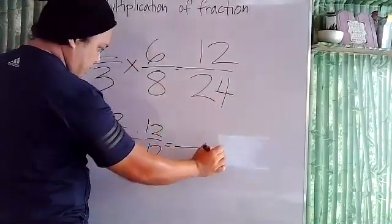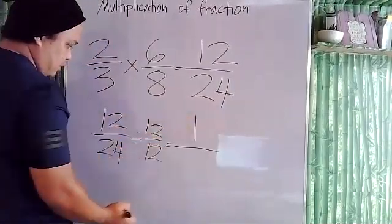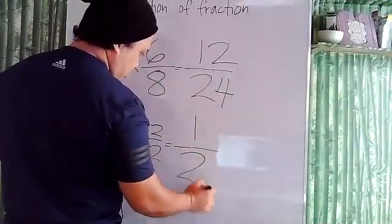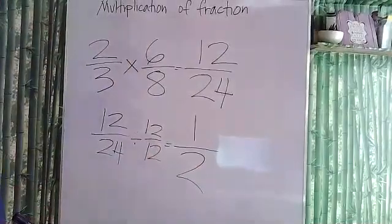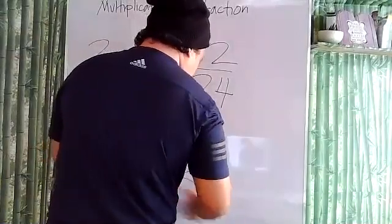We can simplify this because we can divide them both by 12. So 12 divided by 12 is 1, and 24 divided by 12 is 2. One-half is our final answer.